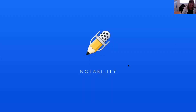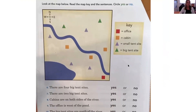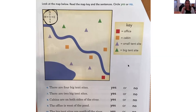So now we're going to turn to the back of our paper and work on another map. It says: look at the map below, read the map key and the sentences, and circle yes or no. Does our map have a title? No. Does our map have a compass? Yes, it does — here's the compass right here. Does it have a key? Yes. The red square means the office, the orange square is the cabins, the purple triangle is the small tent sites, and the green triangle is the big tent sites.